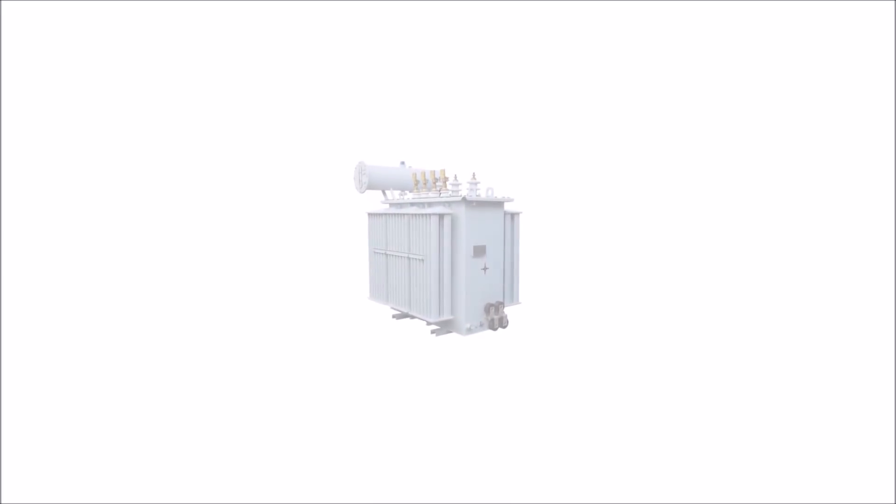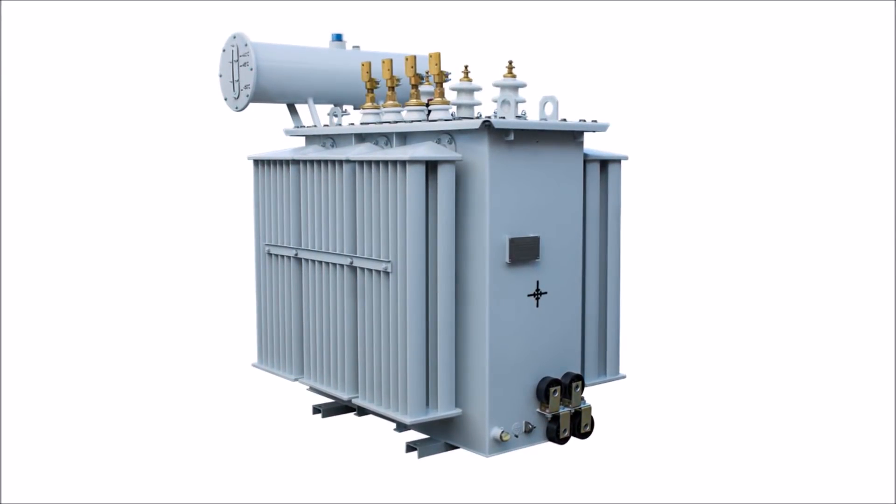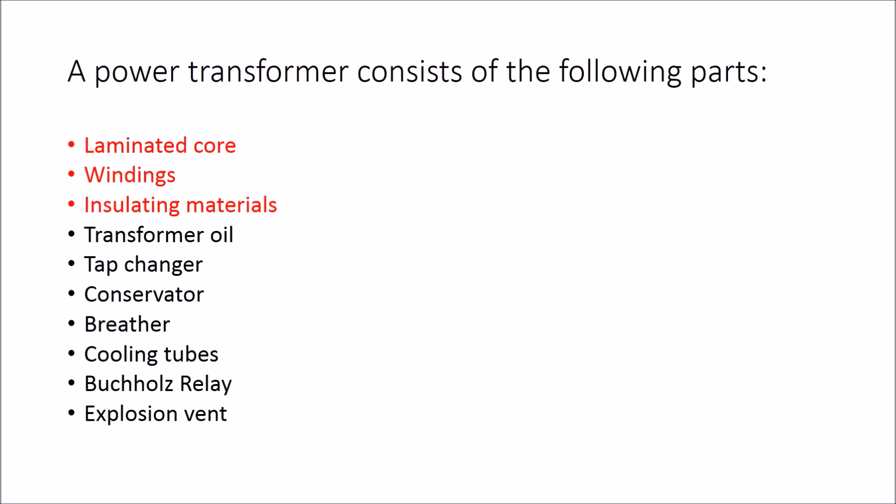A transformer is an electrical device that transfers electrical energy from one circuit to another by electromagnetic induction. It is used to step up or step down AC voltages. A transformer consists of a laminated core, windings, insulating materials, transformer oil, tap changer, oil conservator, breather, cooling tubes, Buchholz relay, and explosion vent. Of these, the laminated soft iron core, windings, and insulating material are the primary parts present in all transformers, whereas the rest are found only in transformers having a capacity of more than 50 kVA.